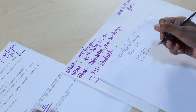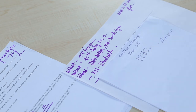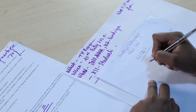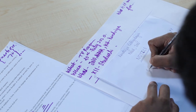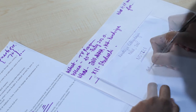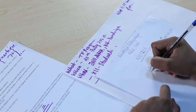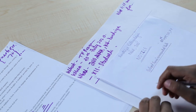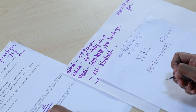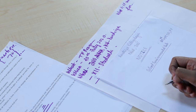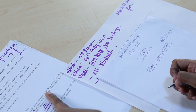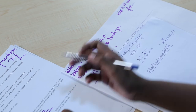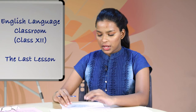Then we will write which club we are representing — the School Environment Club. So in the middle I will write in bold letters and underline it. I will start from the School Environment Club and the heading is: Tree Plantation Program.